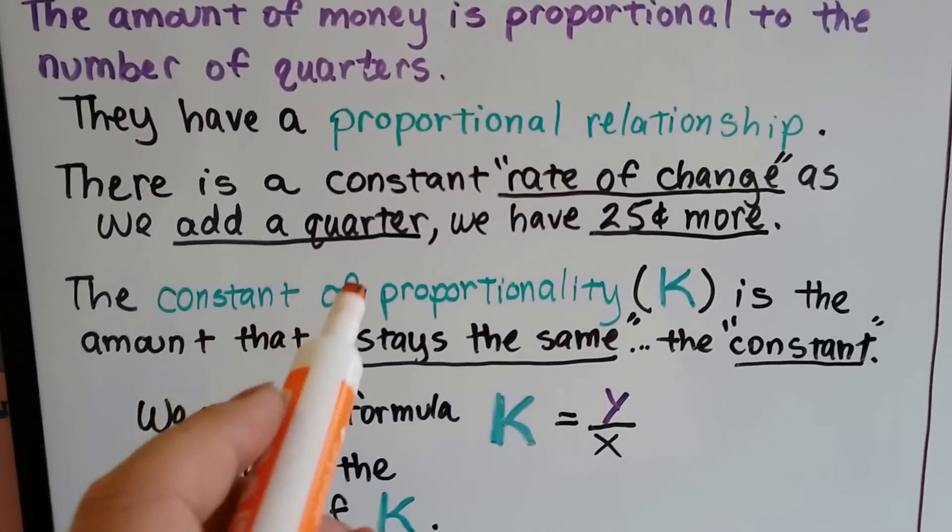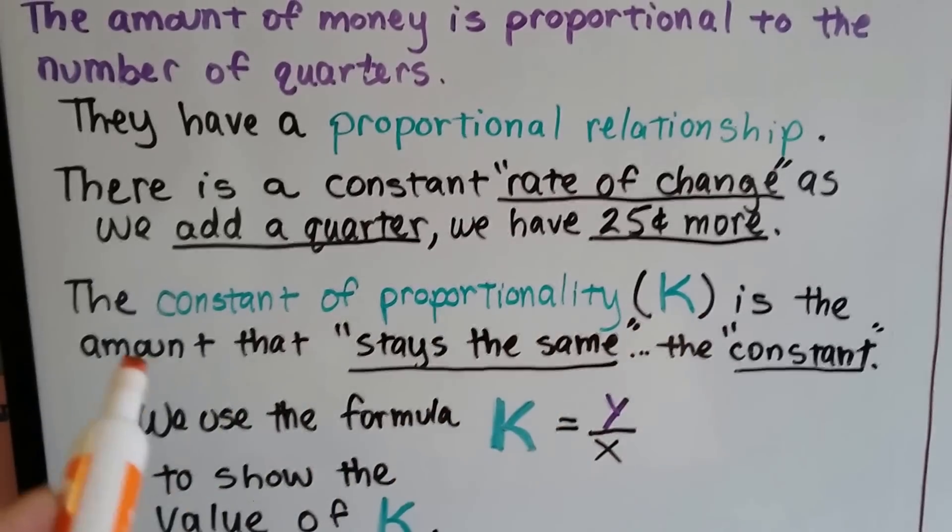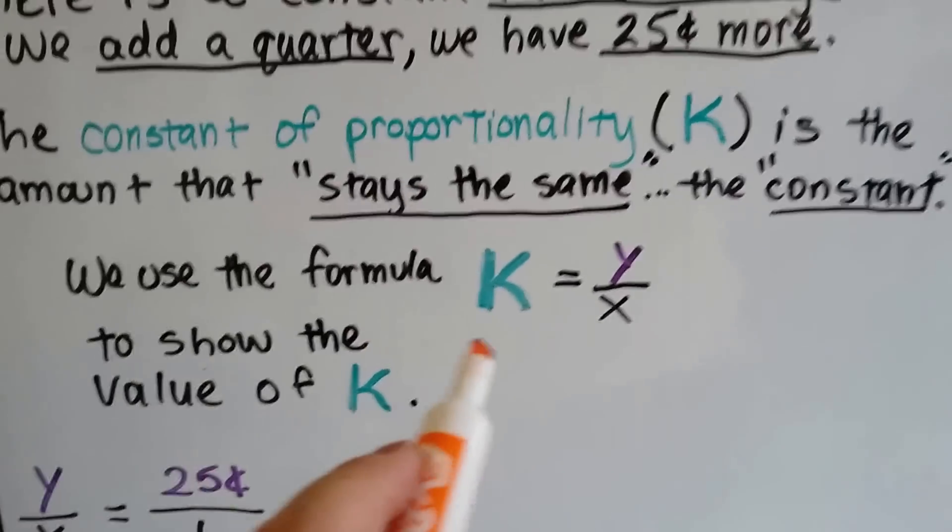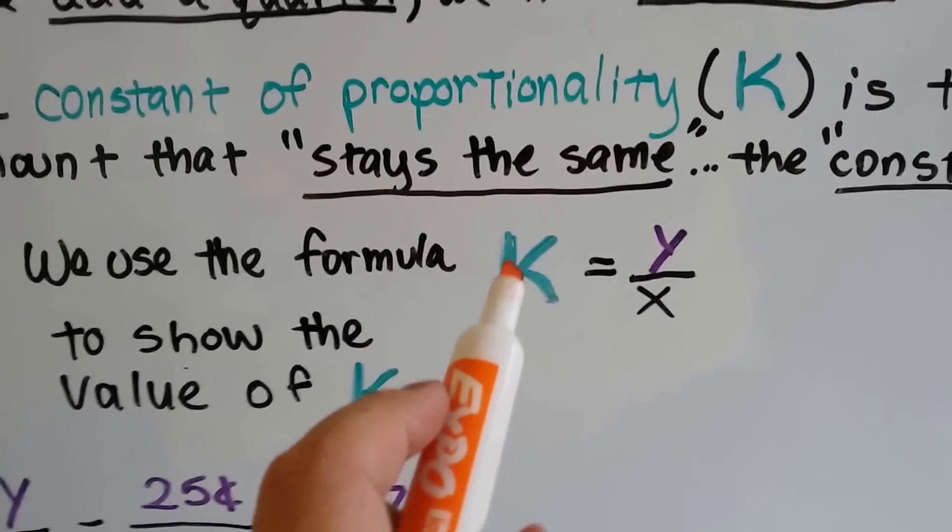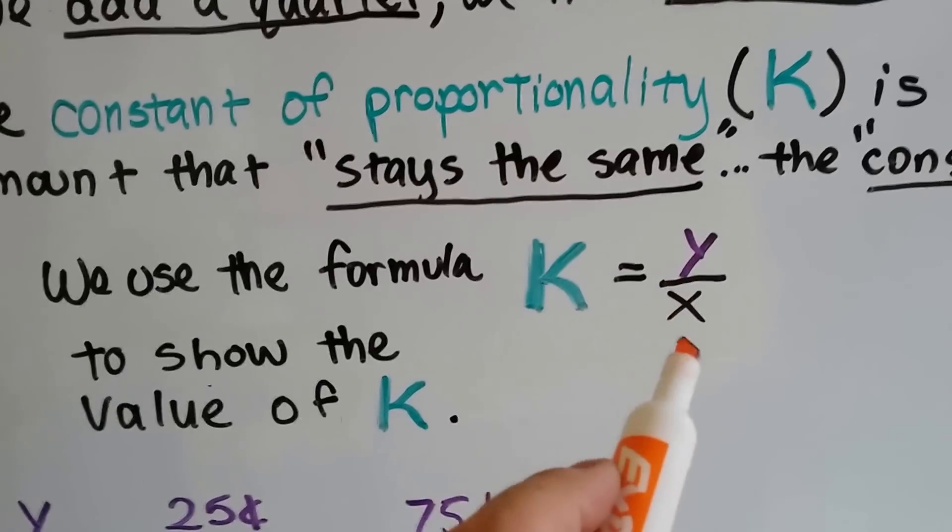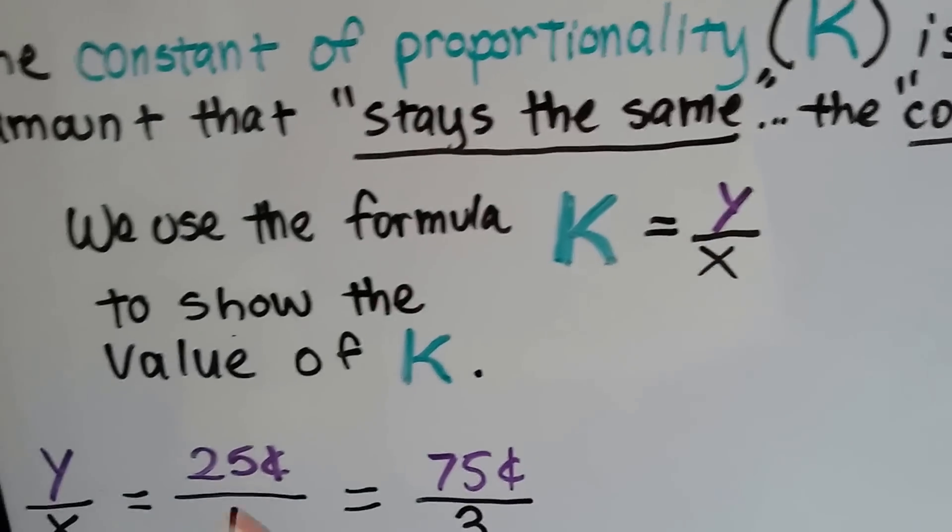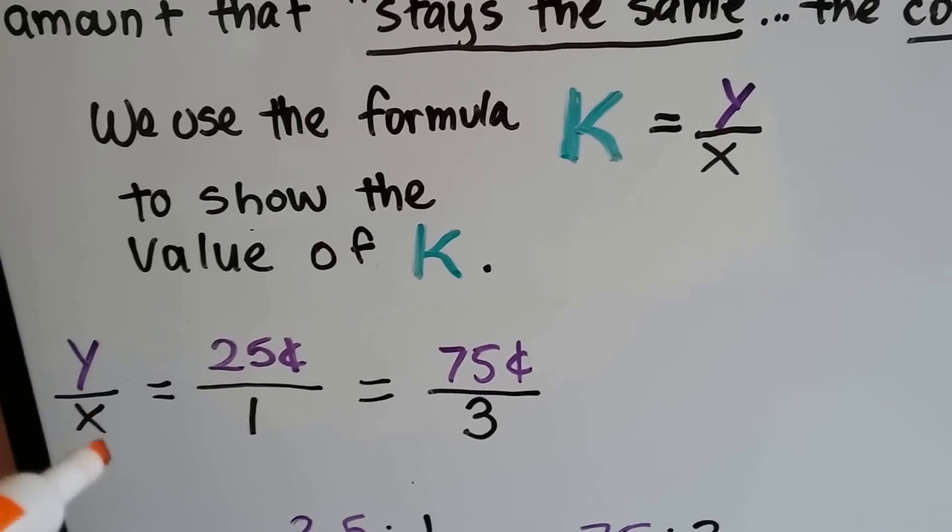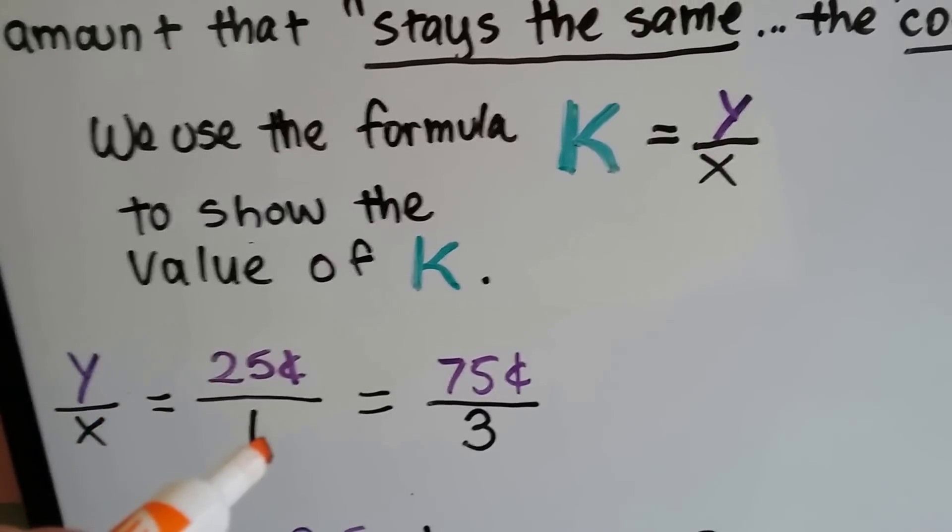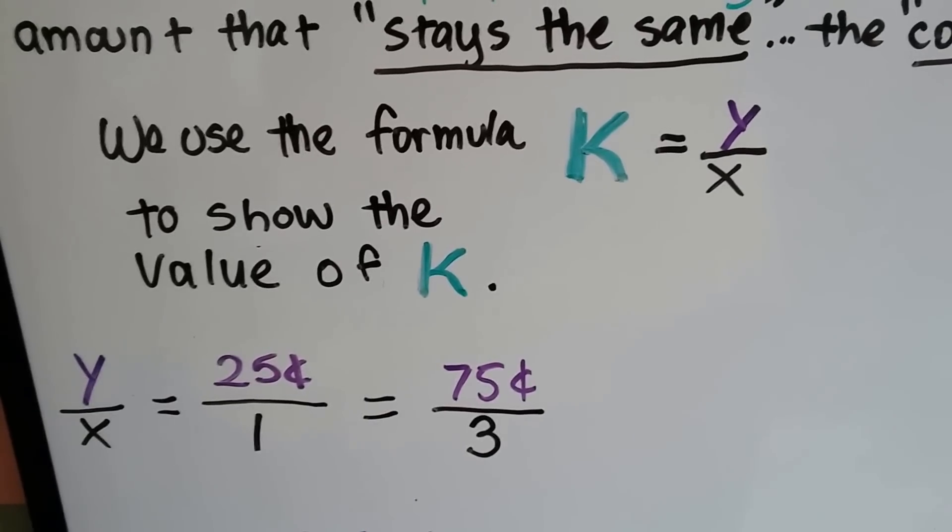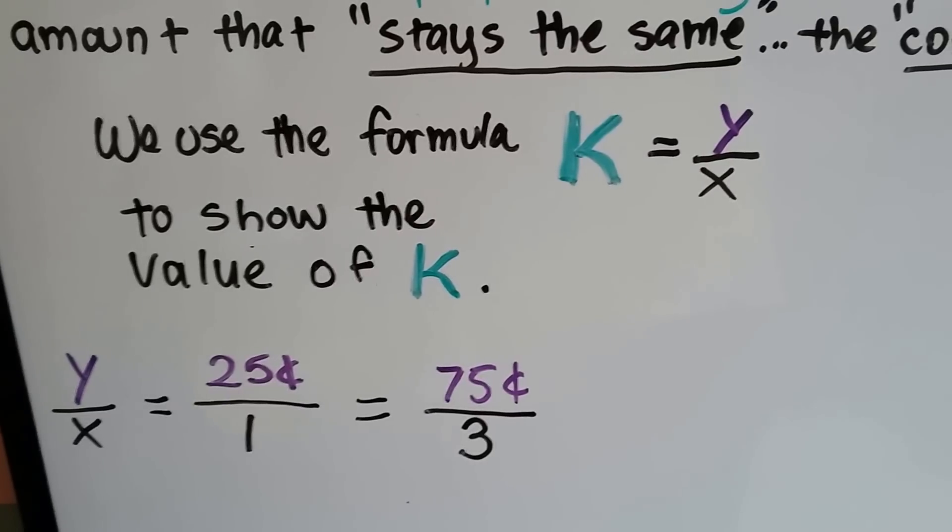The constant of proportionality, K, is the amount that stays the same, the constant. The 25 cents. We use this formula. It's an equation. K is equal to y over x. K is equal to y divided by x. To show the value of K, the y over x is 25 cents over 1, and it's also 75 cents over 3, or a dollar over 4. And that'll tell us the value of K.